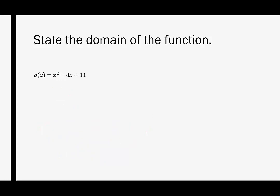In this example we have g of x, which is given by x squared minus 8x plus 11. This is a polynomial, specifically a quadratic. We can plug in whatever we want. There's not going to be any real number that we plug in for x that's going to produce a not real number for g of x. So the domain here will be negative infinity to infinity.